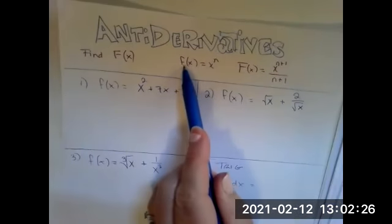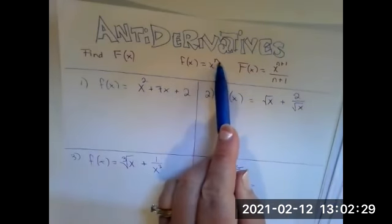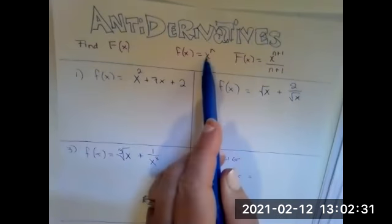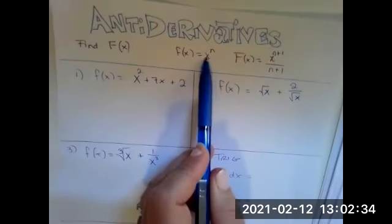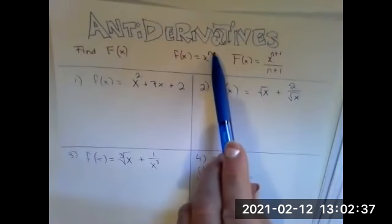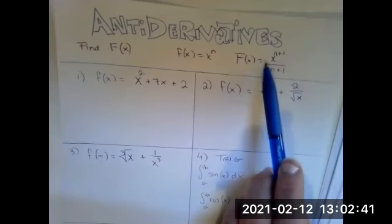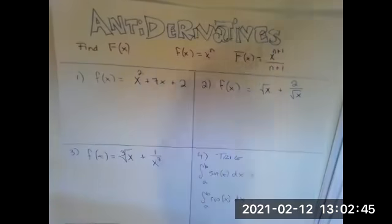If you are given a function, say it's X to the N, the way you would find the antiderivative is basically the power rule that we use for derivatives, but in reverse. Instead of taking away one from the power, we add one, and then to compensate for that and make sure we match the coefficient, we divide by N plus one.